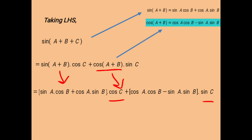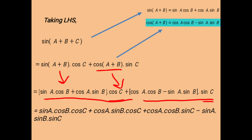Now let's break the big bracket — each of the terms inside the first bracket is multiplied by cosC, and each of the terms of the second bracket is multiplied by sinC. That gives us: sinA·cosB·cosC as the first term, cosA·sinB·cosC as the second term, cosA·cosB·sinC as the third term, and sinA·sinB·sinC as the last term.